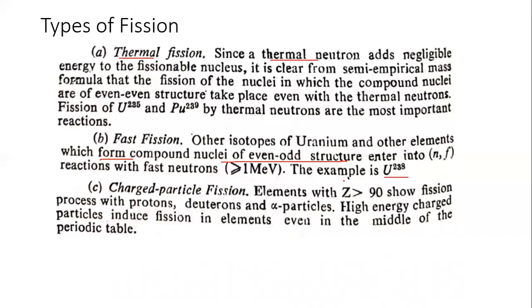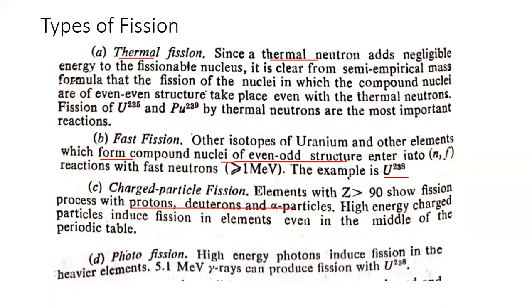Charged particle fission: Elements with atomic number 90 show fission process with protons, neutrons, and alpha particles. The high-energy charged particles induce fission in elements even in the middle of the periodic table. Photo fission: This is light energy. High-energy photons induce fission in the heavier elements. 5.1 mega-electron-volt gamma rays can produce fission with uranium-238. High-energy light and gamma rays are electromagnetic wave energy that can generate fission.